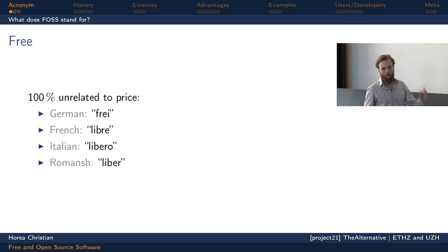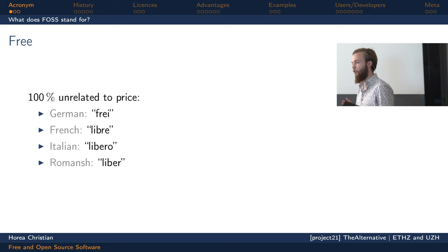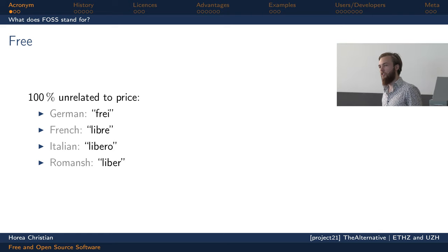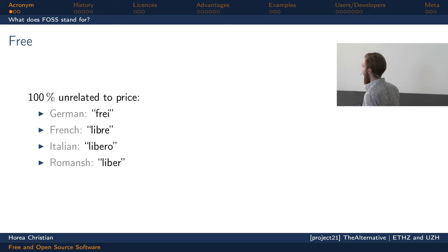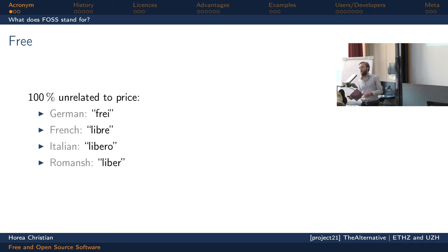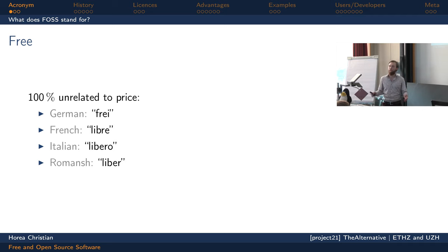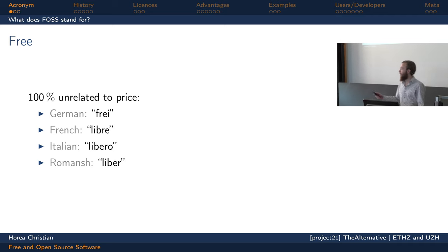That's in fact not the case for the term specifically. Free and open source software doesn't stand for free as in free beer — it stands for free as in free speech. As it happens in English, this is one and the same word, whereas most other languages have a considerably better way of distinguishing the two concepts. In the four national languages of Switzerland, you can call it 'freie Software', 'logiciel libre', or 'software libero'.